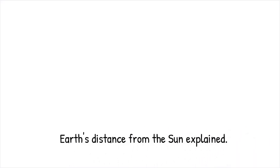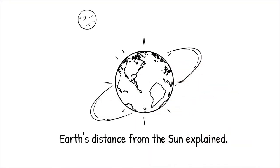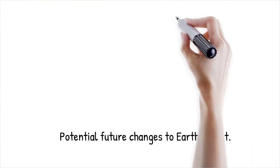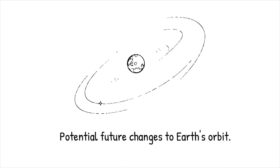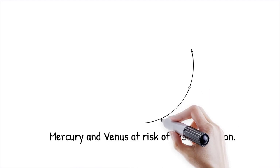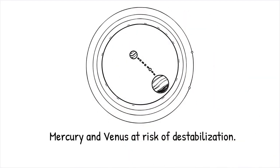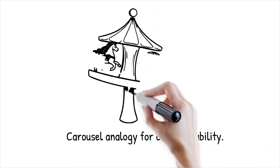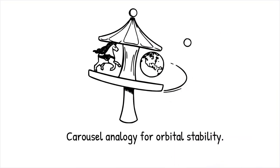Earth's distance from the Sun is influenced by gravitational interactions with other planets, but these effects are too weak to significantly shift its position in the near future. However, in the extremely distant future, if a large planetary body or rogue star passes near the solar system, it could alter Earth's orbit significantly. More realistically, the Sun's evolution into a red giant will cause Earth's environment to change drastically, making it uninhabitable long before any large-scale orbital changes occur. Computational models predict that Mercury and Venus are at greater risk of destabilization than Earth, with Mercury possibly being ejected from the solar system in the next 3-4 billion years due to gravitational interactions. This is like a well-balanced carousel. So long as no external force disrupts it, the motion remains predictable, but if a strong push is introduced, it can alter the ride completely.